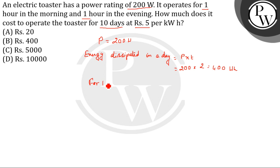So for 10 days, it will be 400 into 10 which gives us 4000 watt hour or we can write as 4 kilowatt hour.